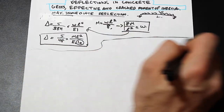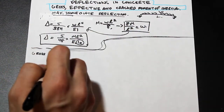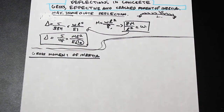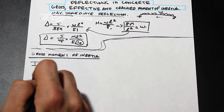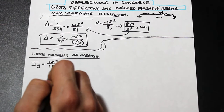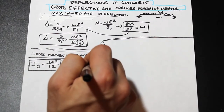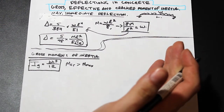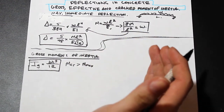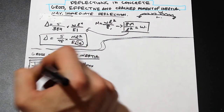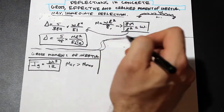For an uncracked section we use the gross moment of inertia, Ig = bh³/12, because the entire section is contributing to resistance. This applies only when the cracking moment Mcr is larger than the maximum moment — meaning the applied moment is not high enough to crack the beam at mid-span, so none of the beam will crack and we can use Ig throughout.